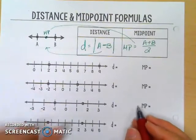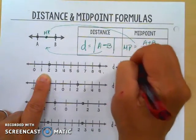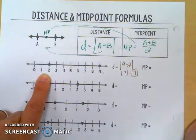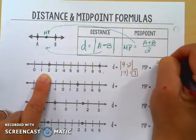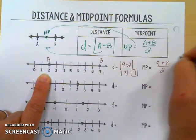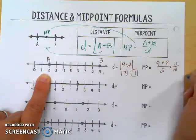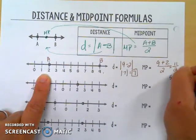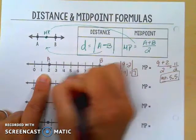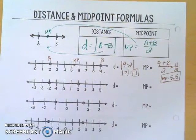For the first number line example, finding distance: it doesn't matter if I say 2 minus 9 or 9 minus 2. Either way I get the absolute value of 7, which is just 7. For the midpoint, I add the two endpoints: 9 plus 2 divided by 2 gives 11 over 2. Converting to a decimal, that's 5.5 for the midpoint — and looking at the number line, 5.5 is definitely in the middle of both of them.